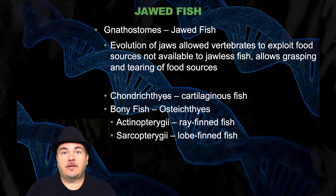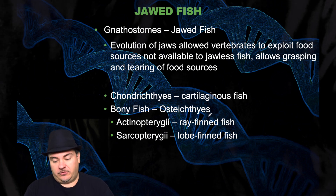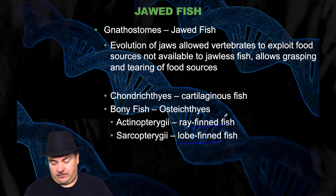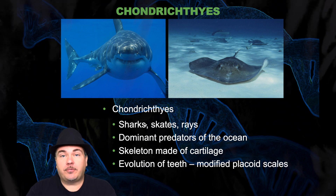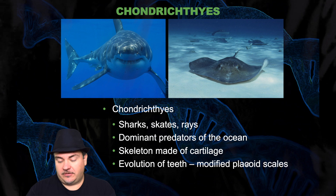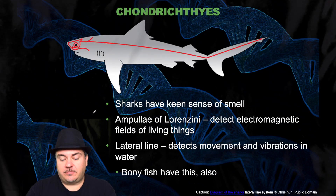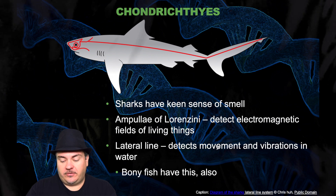Within the jawed fish you have the Chondrichthyes, which are fish that have cartilage instead of bone. Then you have the bony fish, which are the Osteichthyes. The Chondrichthyes have cartilage, not bone — this is sharks, skates, and rays. They're the dominant predators of the ocean. Their skeleton is made of cartilage and they have teeth which are modified placoid scales. Among these, sharks have a keen sense of smell. They can also detect electromagnetic fields of living things. They have a lateral line which detects movement and vibrations in the water, and bony fish also have this lateral line.